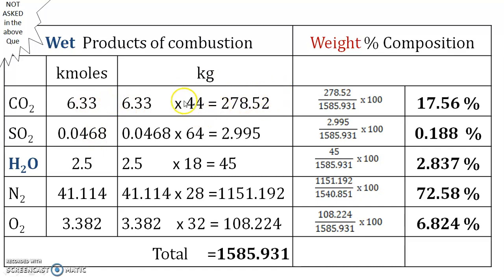The conversion is done by multiplying each individual component by its molecular weight: carbon dioxide is 44, SO2 is 64, water is 18, nitrogen is 28, and oxygen is 32. Multiplying each component by its molecular weight gives the weight of all components. Add all these weights, then use the same formula: individual component weight divided by the total weight, multiplied by 100, to get the weight percentage of each component.